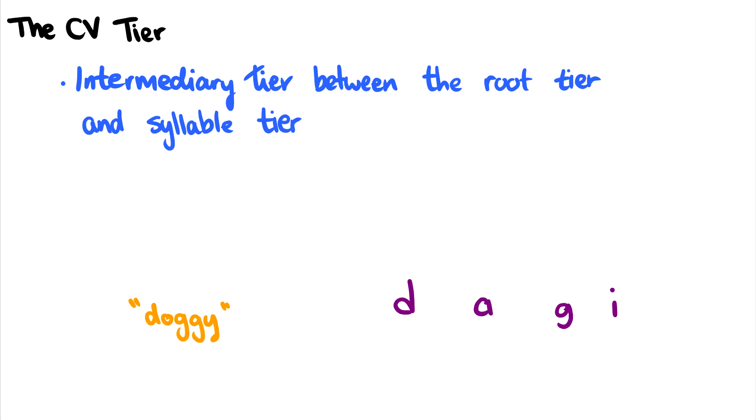So for instance, in doggy, in this transcription, you would have D as a consonant, V as a vowel, G as a consonant, and of course, E is a vowel, and then you could build your syllables from there. So we can abbreviate something like doggy and we can see a little bit more about syllable structure requirements.